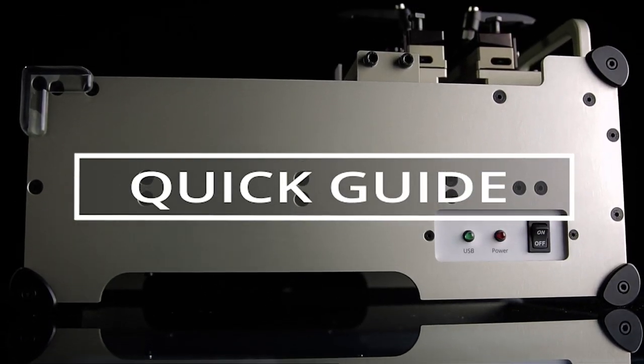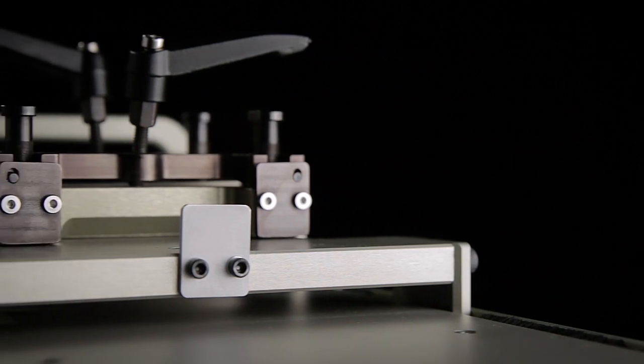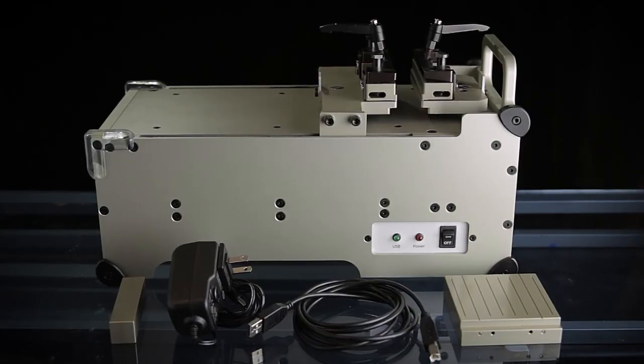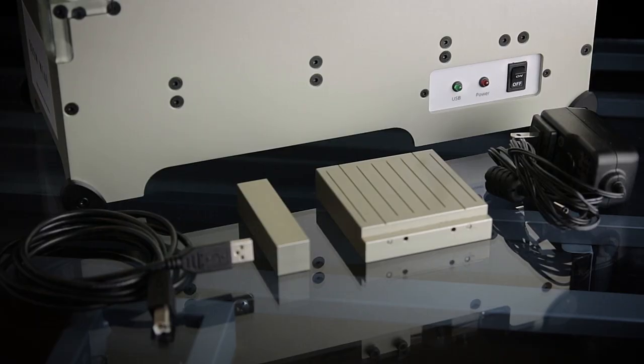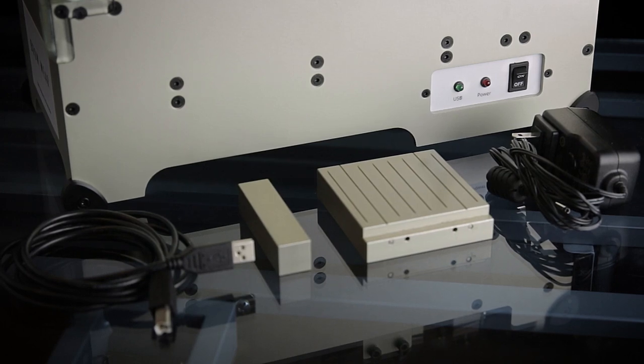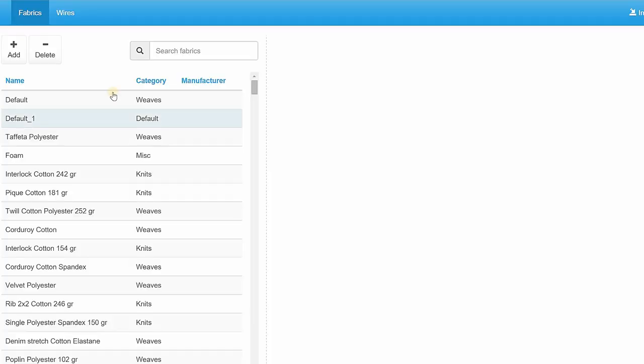Welcome to part two of our two-part quick guide video series for the Fabric Analyzer by Browseware. In part one, we provided an overview of the FAB's parts, accessories, and their function, as well as the basics of installing the DB admin software and setting up the equipment. So be sure to check out that video if you need a review. In this video, we'll walk you through the steps to test your very own fabric and add it to the database.